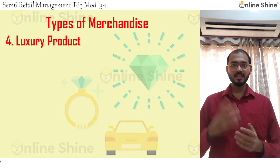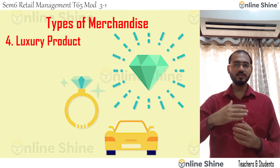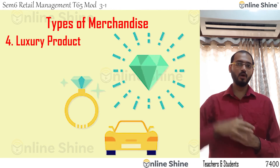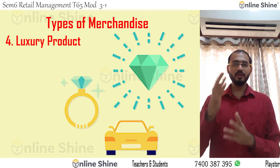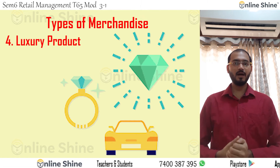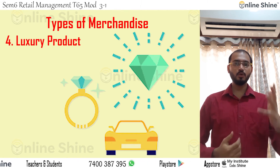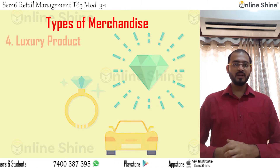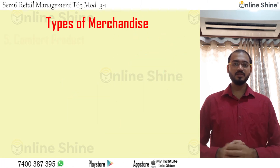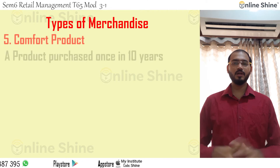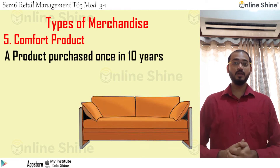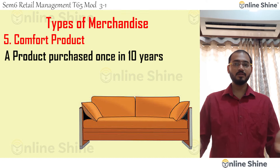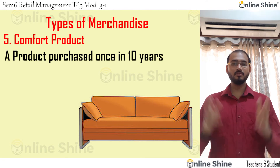Conventional purchase includes vegetables. Luxury refers to costly products like cars and jewelry — you buy these once in a while, perhaps every three to four years; it is not a daily product. Comfort products, such as a sofa set, may be purchased once in about ten years and replaced only occasionally.